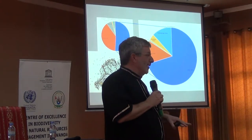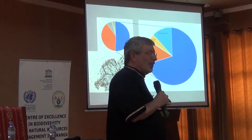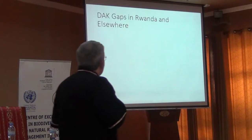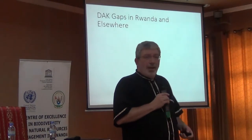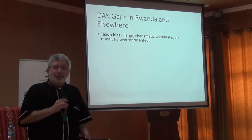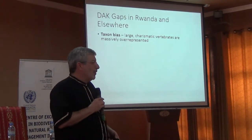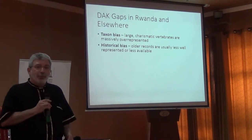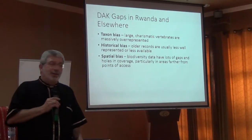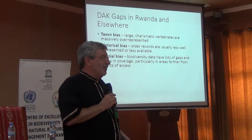This isn't a criticism — this is reality. The same thing happens for Kansas, where I live. We have a few sites that are well known and lots of sites that are poorly known, a few taxa that are well known and lots of taxa that aren't. So what do these DAK — digital accessible knowledge — gaps look like? We generally have a pretty massive taxon bias, especially large charismatic vertebrates that tend to be massively overrepresented. We have a history bias where we usually lose the older records, and spatial biases in that we know most about places that are accessible.